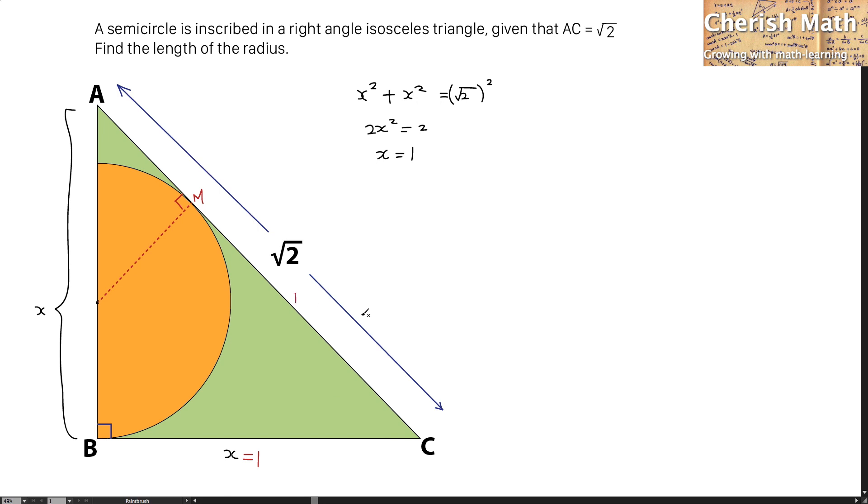Now I need to find what is the value of AM, that would be the square root of 2 minus 1.